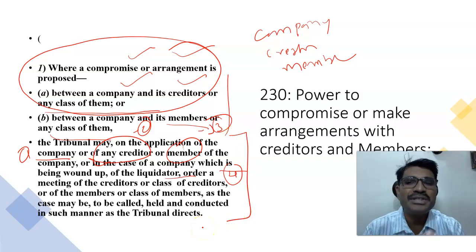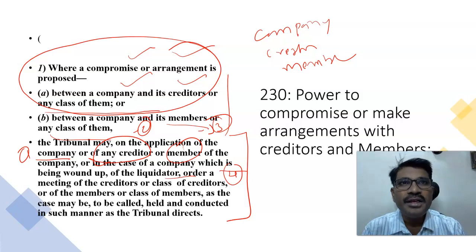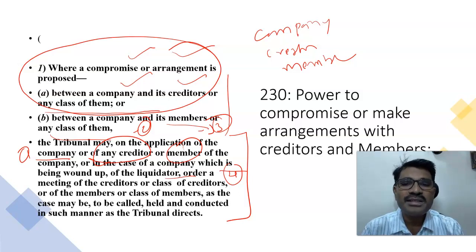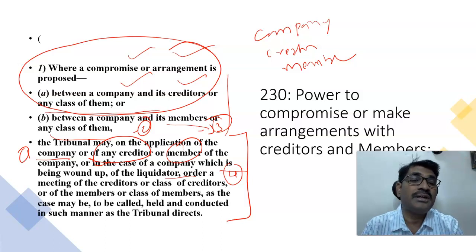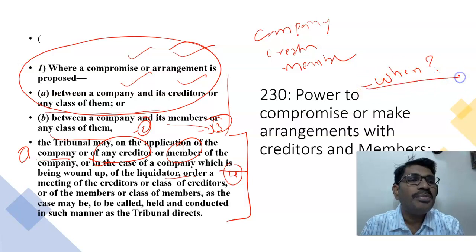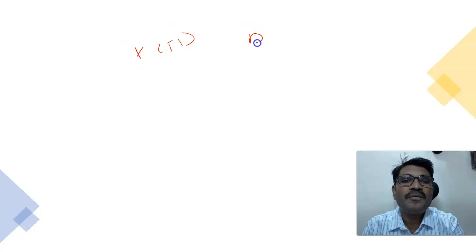When reading Section 230, the tribunal can pass an order on requests received from members of the company, creditors of the company, or the company itself, to go for restructuring. The application must be filed either by the members or by the creditors. Company law is very silent as far as compromises and arrangements are concerned regarding when one company will merge with another.